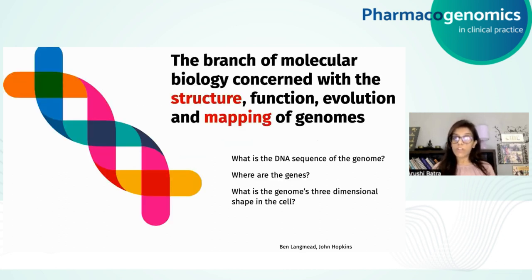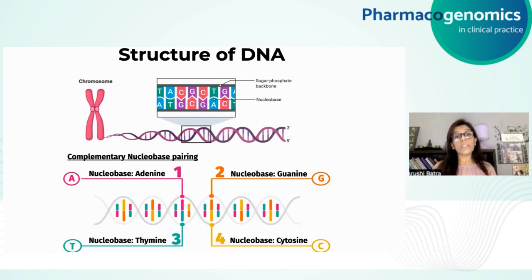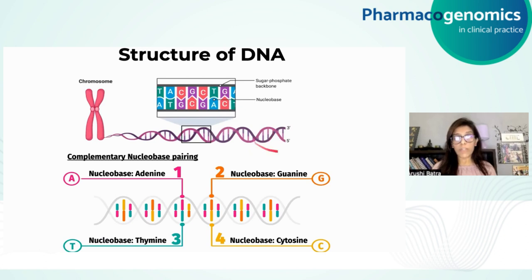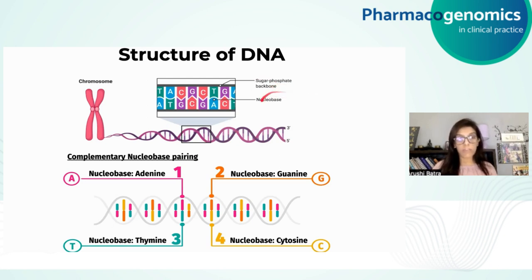When we look at structure and mapping of genomes, we are asking: what is the DNA sequence of the genome, what are the genes in the genome, and what is the genome's 3D shape in the cell? To answer these questions, let's look at the structure of DNA in more detail. DNA is made up of two linked strands that wind around each other to resemble a twisted ladder — a shape known as a double helix. Each strand has a backbone made up of alternating sugar deoxyribose and phosphate groups.